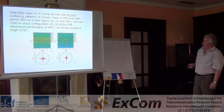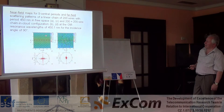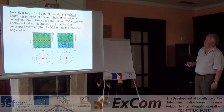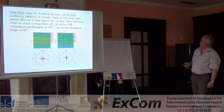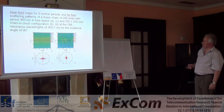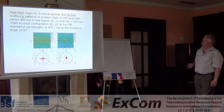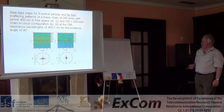We have 200 nanowires with a period of 200 nanowires in free space in cases A and C, and in the case of 200 ordered nanowires in the cloud configuration — case B — here is the far field, integrating both resonances at a wavelength of 450.1 nanometers for a 90-degree angle of incidence.